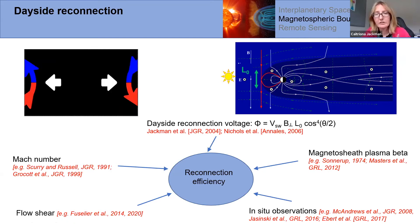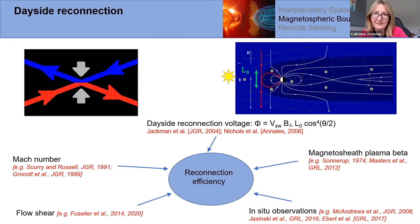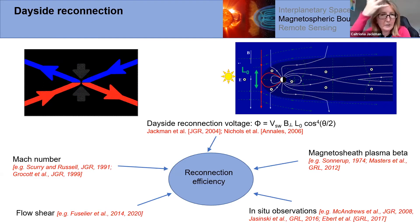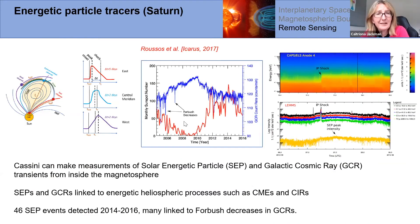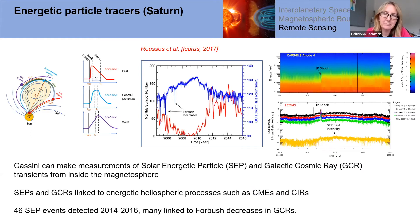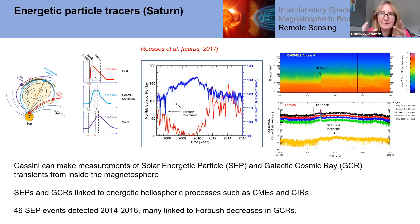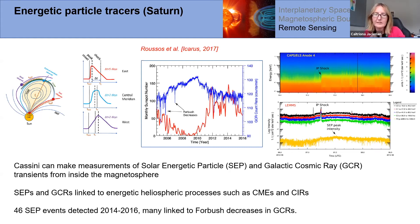There are in-situ observations of reconnection happening at Jupiter and Saturn. Very briefly, solar energetic particle events have been mentioned in the context of coronal mass ejections. Cassini at Saturn could make measurements of SEPs and galactic cosmic rays from inside Saturn's magnetosphere — a rare case where we can get around the lack of an upstream monitor. The energetic particle instrument on Cassini could measure Forbush decreases and changes in SEPs, using those to link energetic heliospheric processes like CMEs and CIRs to processes seen deep inside Saturn's magnetosphere — another creative way of using the data to infer what's going on upstream.